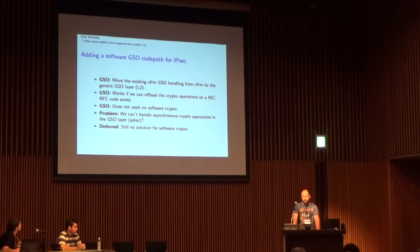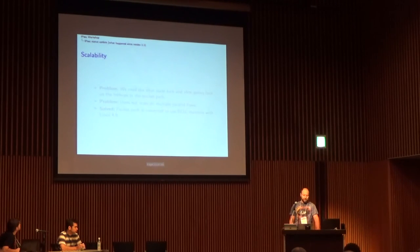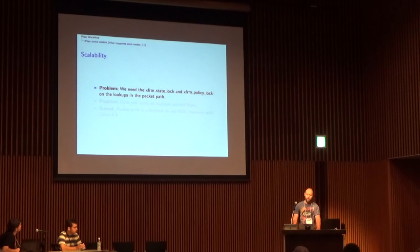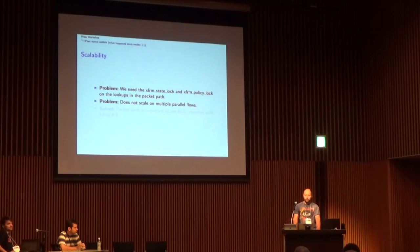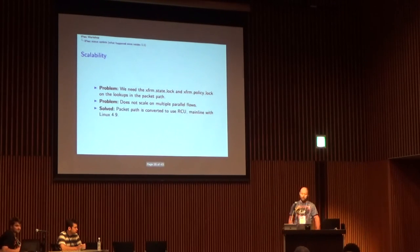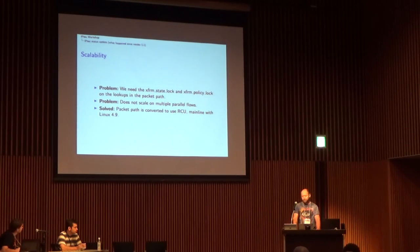That's the status for GSO. On scalability: the problem is that we need several locks per packet for state and policy lookups, and this doesn't scale well with multiple parallel flows. This was solved recently — we converted the packet path to RCU. This work was done by Florian Westphal and it's going to be mainline with the next kernel version.